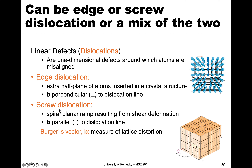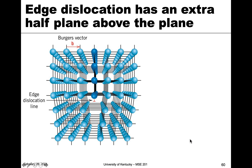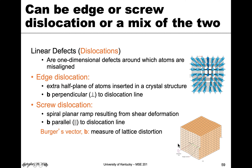A screw dislocation can be visualized like a spiral ramp — you can see a step between the bottom and the top. This is the result of shear: this portion moving one way and the bottom portion moving the other. The difference in definition for a screw dislocation is that the Burgers vector b is parallel to the dislocation line. As a quick definition, the Burgers vector b is the measure of distortion — how distorted the lattice is.